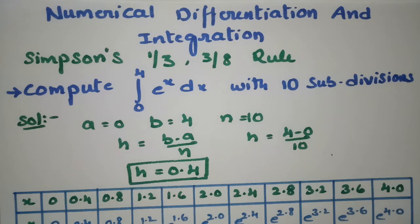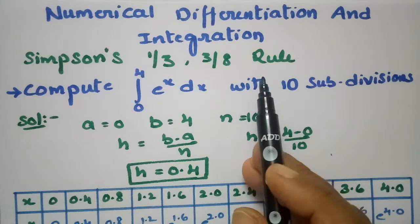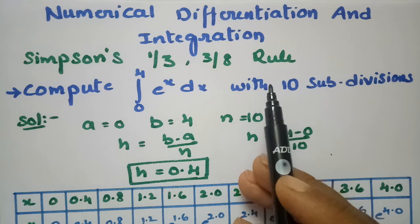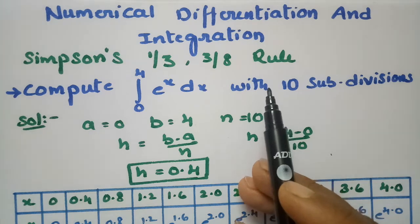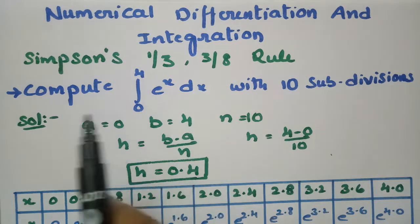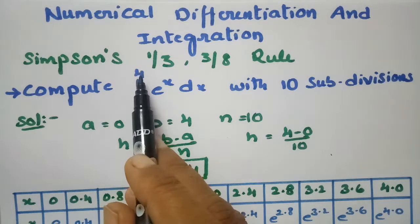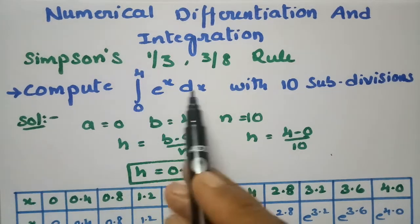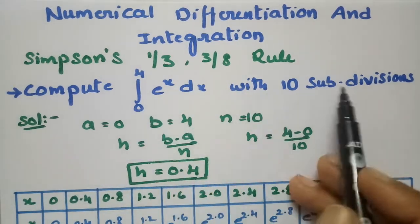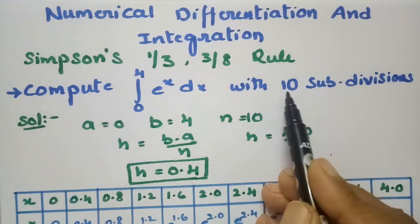In this video, we are going to explain the problem using Simpson's 1/3 as well as 3/8 rule. This problem is from numerical differentiation and integration. We are going to compute the integral from 0 to 4 of e^x dx with 10 subintervals.